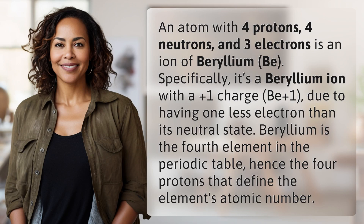An atom with four protons, four neutrons, and three electrons is an ion of beryllium. Specifically, it's a beryllium ion with a plus one charge, Be⁺¹, due to having one less electron than its neutral state. Beryllium is the fourth element in the periodic table, hence the four protons that define the element's atomic number.